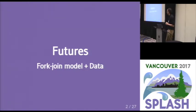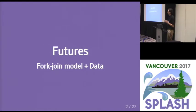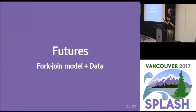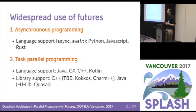First, just for those of you who don't know what futures are, you can think of them as a fork-join model extended with data. You have a primitive fork that is able to create a new logical task, and then you have a join primitive that, given two logical tasks, merges them into one. The data component represents some data dependency.